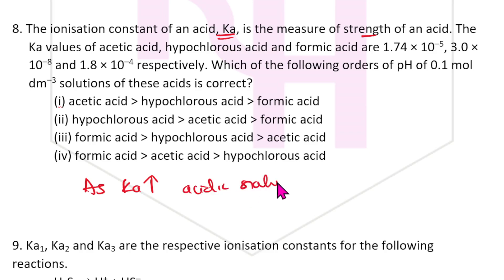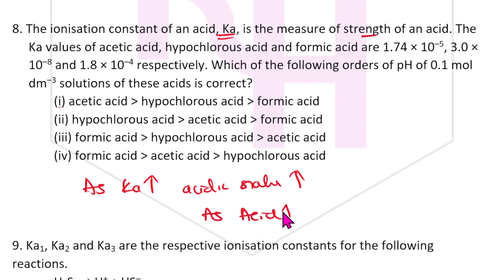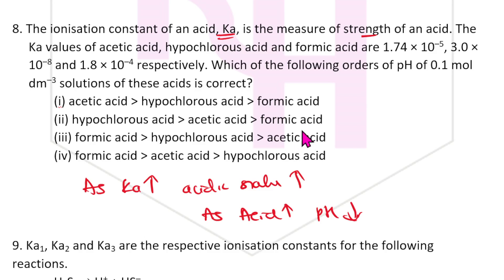Eighth question: Ka measures the strength of an acid. As Ka increases, acidic nature increases and pH decreases. Which of the following is the correct order of pH of 0.1 mol solutions of these acids? The acid with the highest Ka has the lowest pH.